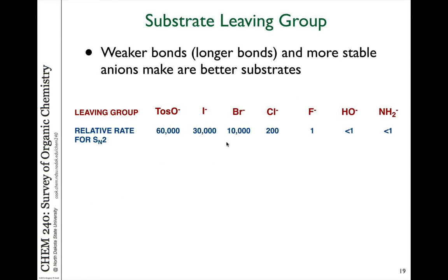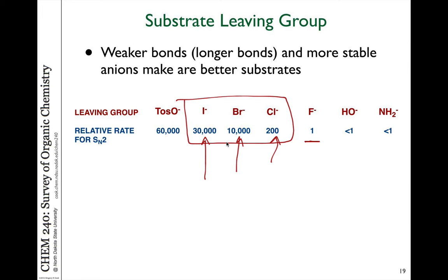What about the leaving group? There are differences in reactivities depending on how weak their bonds are. Looking at halogens, if fluorine is set to a relative rate of one, chlorine is 200 times more reactive, bromine is 10,000 times, and iodine is 30,000 times more reactive. The trend of halogen reactivity is exactly as predicted based on bond strength weakening as you go from fluorine to iodine. Fluorines are relatively inert and very difficult to use in these reactions. Trying to do a substitution kicking off an OH or NH2 group is also very difficult.